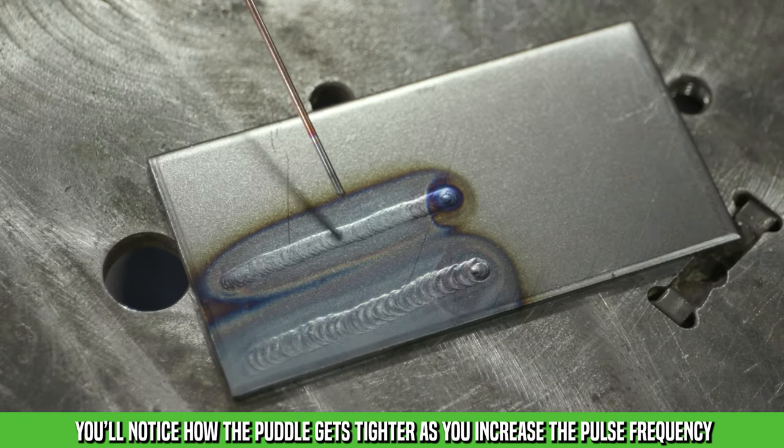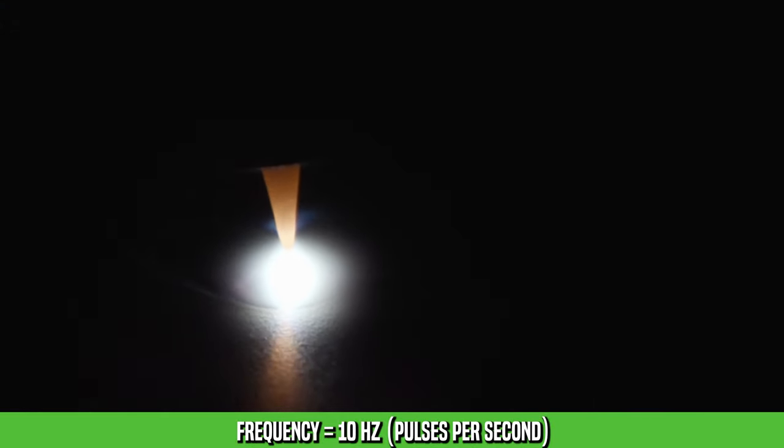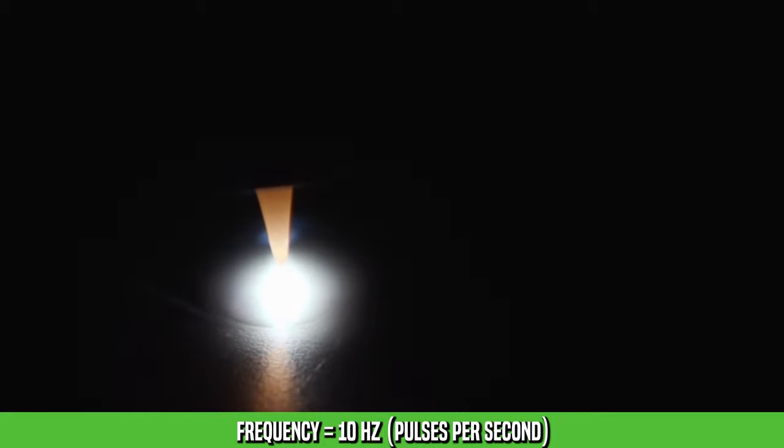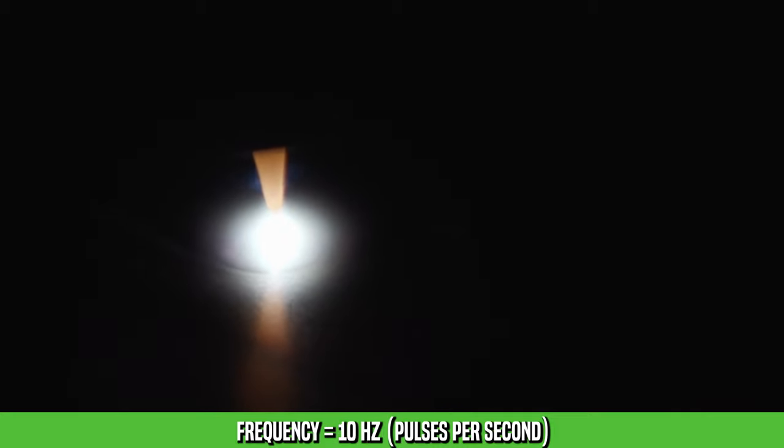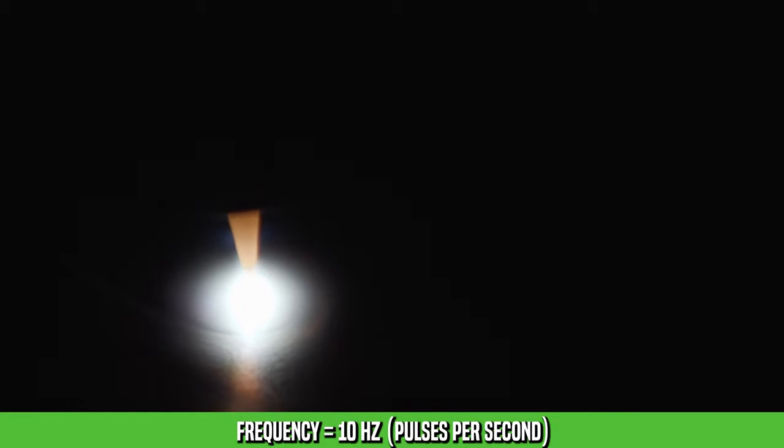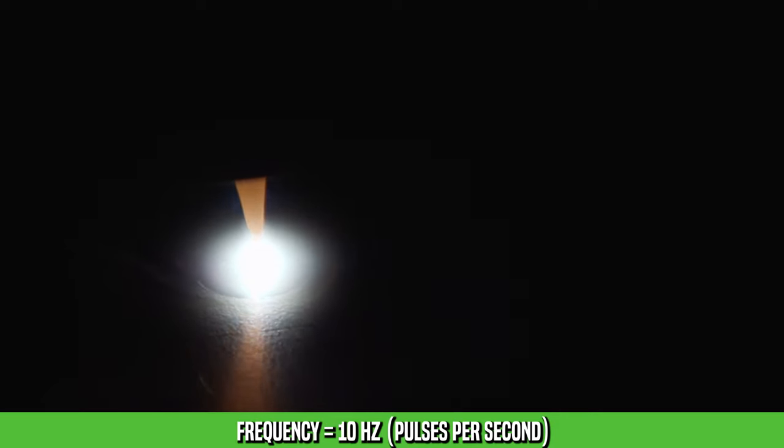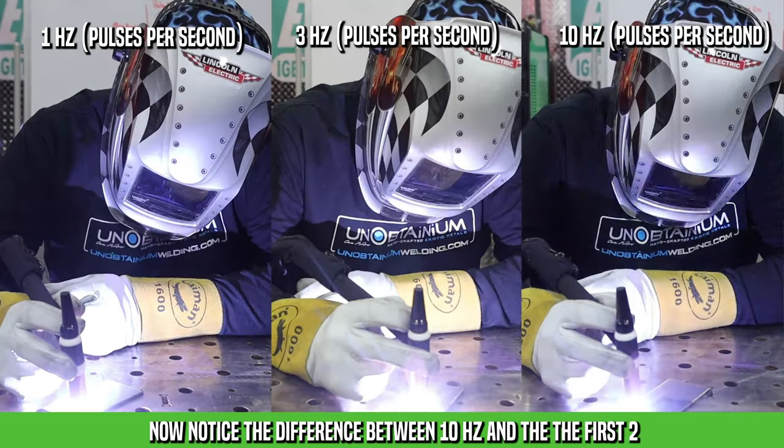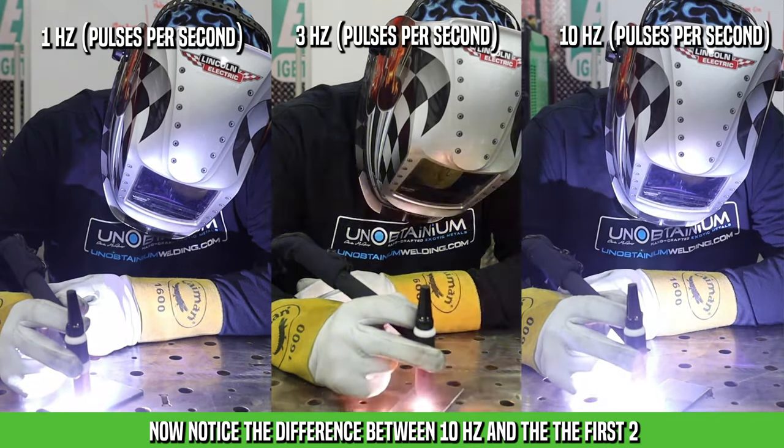So the higher the frequency, the more it tightens up that puddle. So now we're running 10 pulses per second. You can see even visually the difference in how fast it's flashing, but also now the puddle starts to become pretty smooth. We're running enough pulses per second that it's starting to feel less like a pulse puddle and more like a DC puddle.